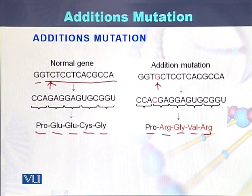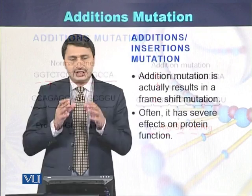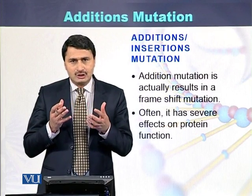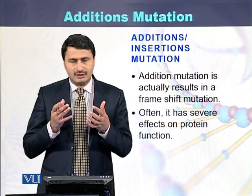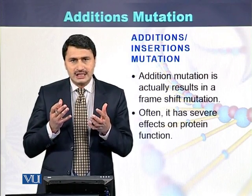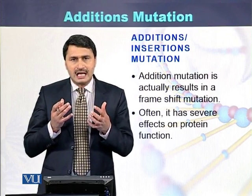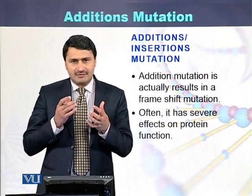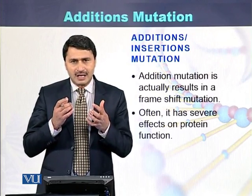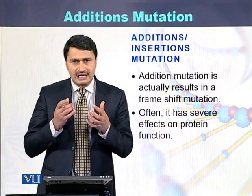There was addition of just a single nucleotide, and due to the addition of that single nucleotide, the entire amino acid sequence has been changed. Addition mutations are those mutations in which there is addition of a single nucleotide — or more than one nucleotide — in the normal sequence of the DNA. They are also called frame shift mutations, in which the frame of the DNA changes as well as the protein or amino acid sequence produced.